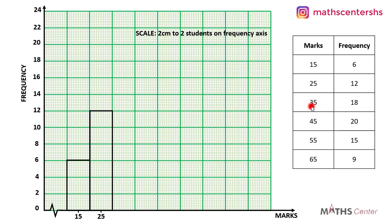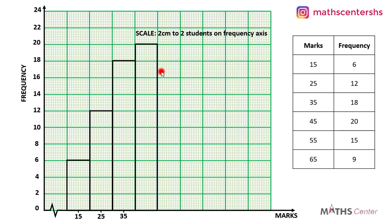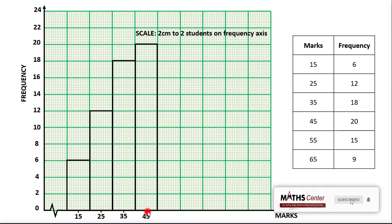We move on to the next one, which is the bar for 35. The frequency is 18, so the mark will be at the center — 35 will be at the 5th division. The next one is 45. The frequency is 20, so the height of the bar is at 20, and the mark which is 45 will be at the center of the bar, at the 5th division.